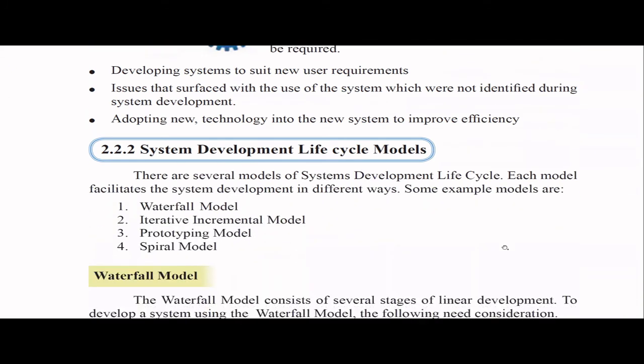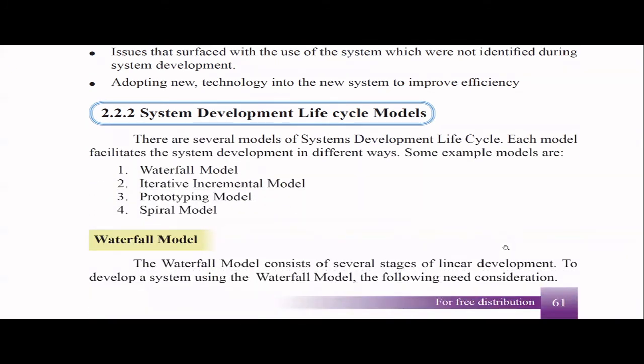When it comes to system development life cycle, there are models — ways we do things in the industry. Your book mentions four: the waterfall model, iterative incremental model, prototyping model, and spiral model. In your syllabus, only the first two are explained. Don't worry about the other two — those are for A-level IT. Please understand the first two clearly as there is a clear difference between them.